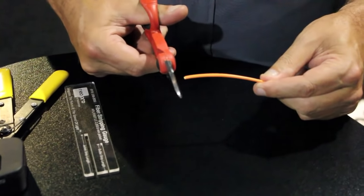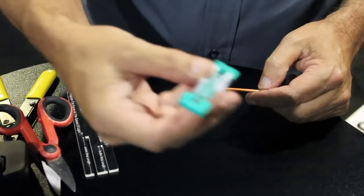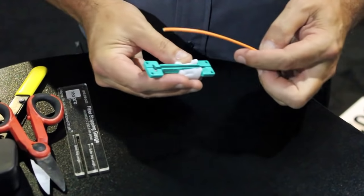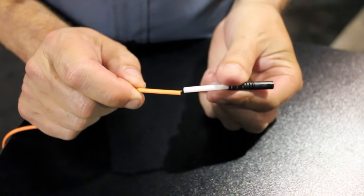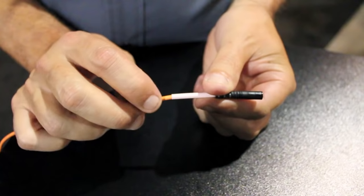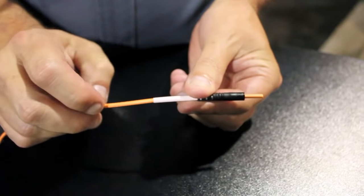Today we're terminating to a 3mm simplex fiber. You need to just cut it, clean it up. Using the included cable clamp will help hold it all together. Don't forget to put your boot on before you start stripping the cable.